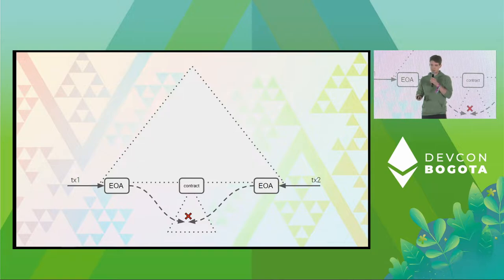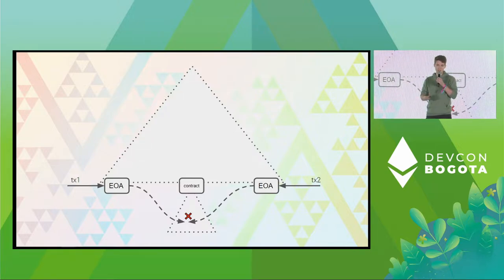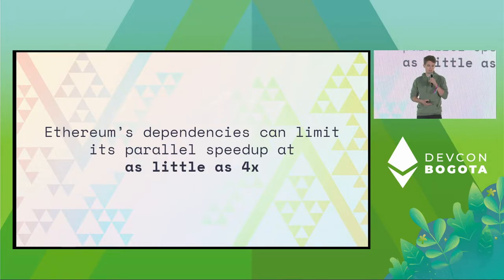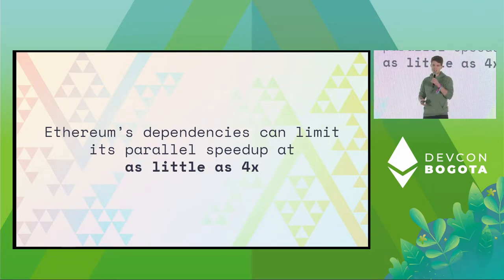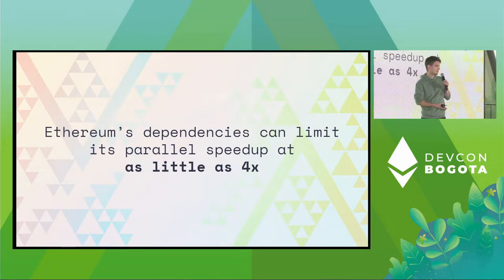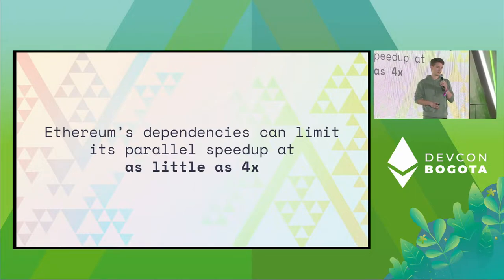On Ethereum this is not a problem now because we execute transactions sequentially, but if you parallelize them then this will become a problem because you cannot concurrently execute such transactions. We did some evaluations — we collected storage traces for a few hundred thousand blocks from historical Ethereum data and ran simulations with an OCC scheduler. What we found is that the theoretical maximum speedup is as little as four times. So even if you have eight or sixteen threads, at least on the VM level, you cannot do much better than four times — which is kind of an underwhelming result.